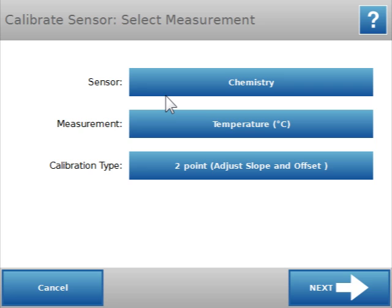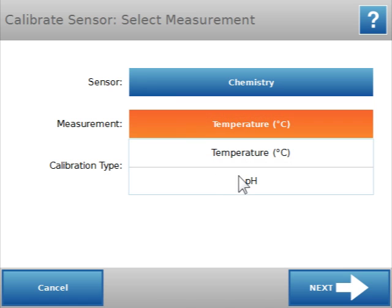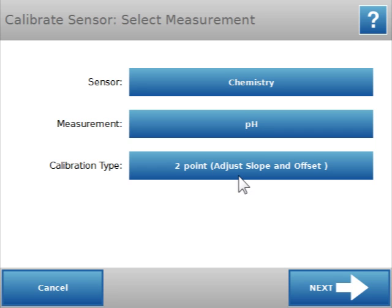You'll see it shows that I have the chemistry sensor connected. The measurement that comes up by default is temperature, but we want pH. So I'm going to touch on that to select pH. You'll see it's already set up for a two-point calibration, which is what we want to use with the pH sensor. I'll say next.